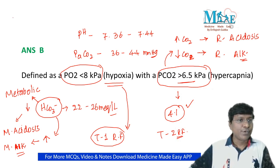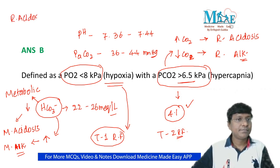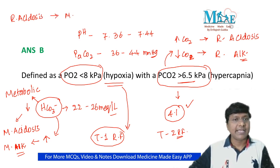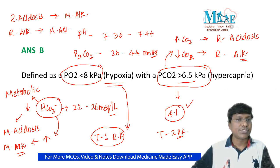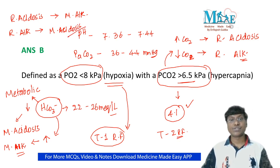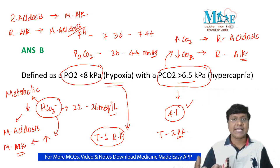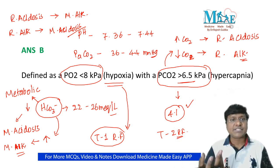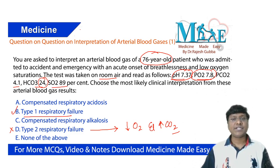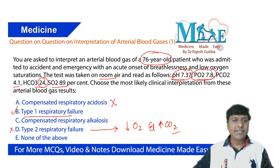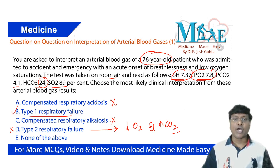Always remember: if a patient has respiratory acidosis, the compensatory mechanism is metabolic alkalosis. If the patient has respiratory alkalosis, the compensatory mechanism is metabolic acidosis, and vice versa. But in our patient, the ABG is completely normal — no acidosis, no alkalosis — so there is no compensated respiratory acidosis or alkalosis. Options A and C are ruled out.